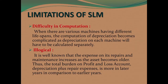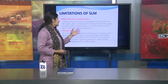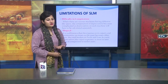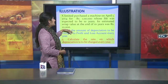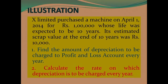The second limitation of SLM is that it is illogical. It is well known that the expense on repairs and maintenance increases as the asset becomes older. Therefore, the total burden on the Profit and Loss account — depreciation plus repair expense — is more in later years in comparison to earlier years, which makes it very illogical.